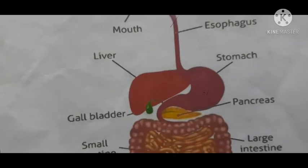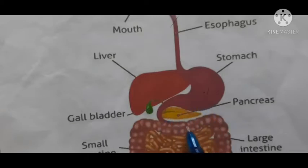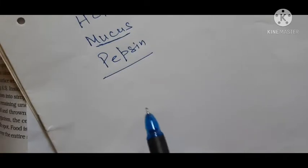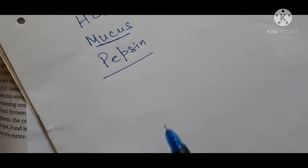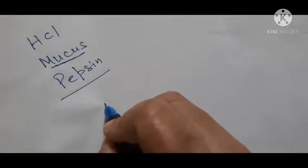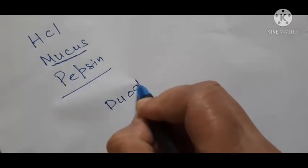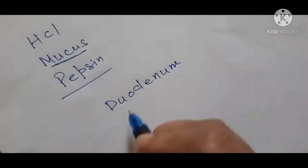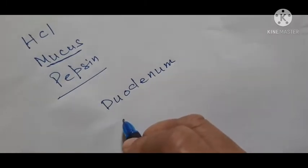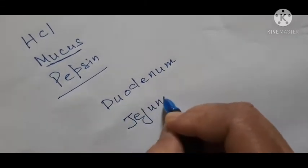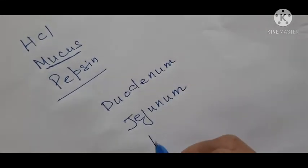The small intestine is divided into three parts. The first part is the duodenum, the second is the jejunum, and the third is the ileum. Please remember these three parts: duodenum, jejunum, and ileum.